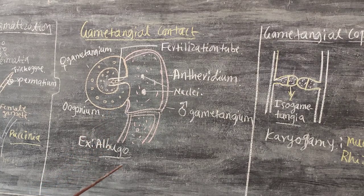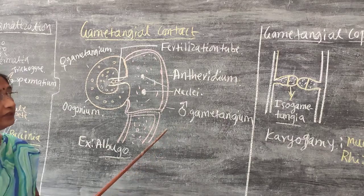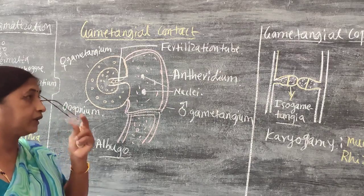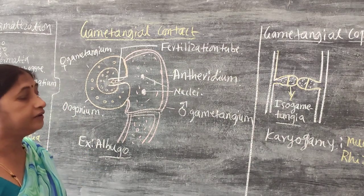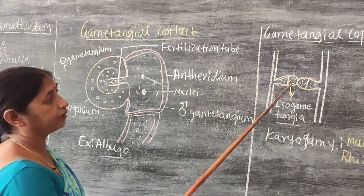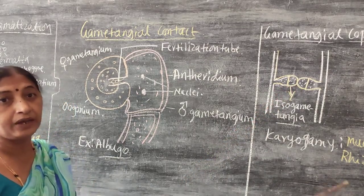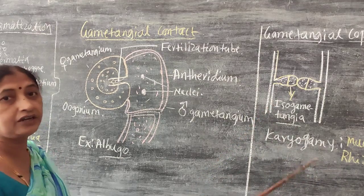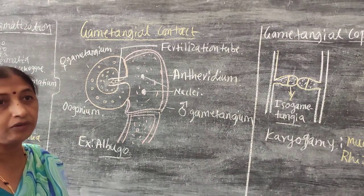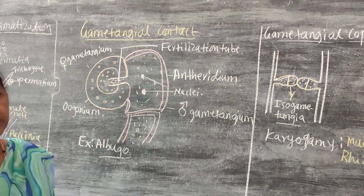This is commonly observed in the case of Albugo. Coming to another type of sexual mode of reproduction: here, the two compatible gametangia — male and female — come in contact with each other. At the point of contact, the wall gets dissolved, and fusion between the two compatible gametangia takes place, resulting in what is known as karyogamy. A diploid structure is formed, which in turn develops into new mycelium. This is commonly observed in the case of Rhizopus.